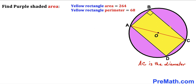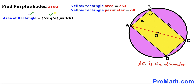Now let's focus on the yellow rectangle and label its side lengths. I'll call its length lowercase a and its width lowercase b. Recalling the area formula — area equals length times width — the area of this yellow rectangle is 264, so a times b equals 264. Let's call this equation number 1.